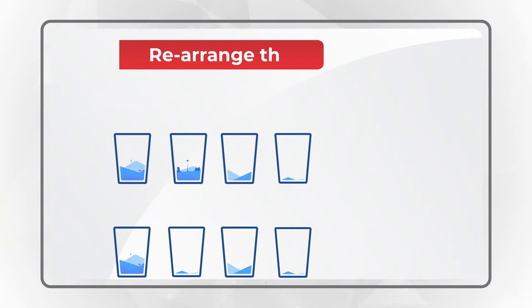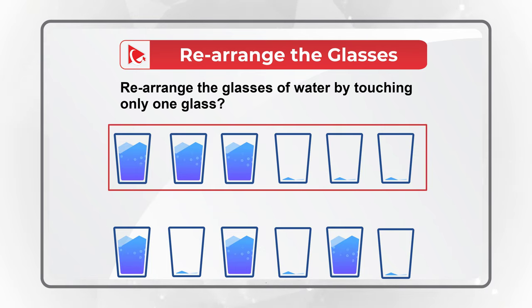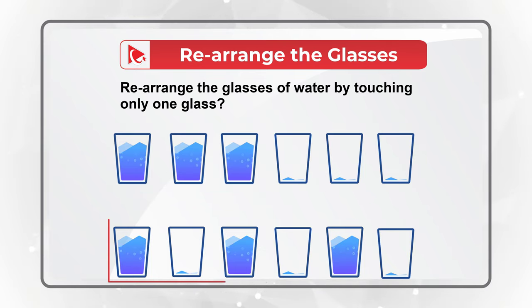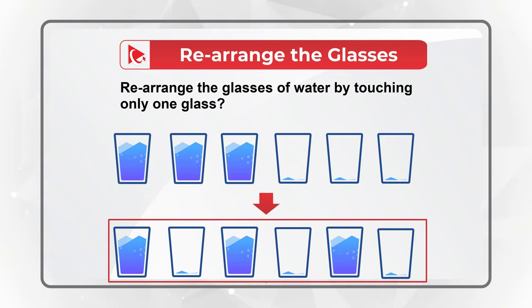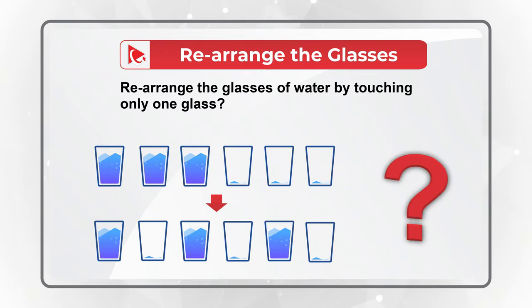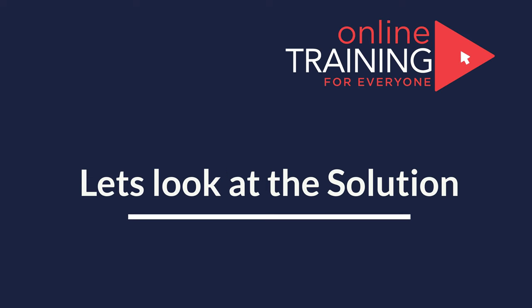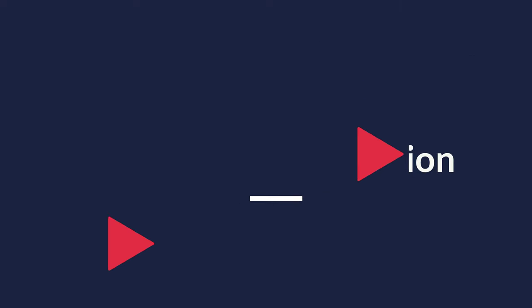You need to rearrange the glasses with water by only touching one glass. You need to get from configuration 1 on the top to the bottom configuration by only touching one glass. Take a close look to see how you can do it. I'm pretty sure you've figured it out, but I'm moving forward to share the solution with you.